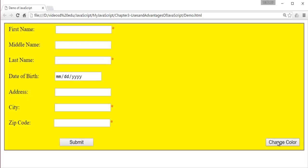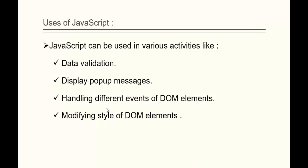When I click on this, the background color will become yellow. This can be achieved with the help of JavaScript. So these are the typical uses we saw in the example: we can validate the data, push a popup message, attach an event to an element, and modify the style of DOM elements.